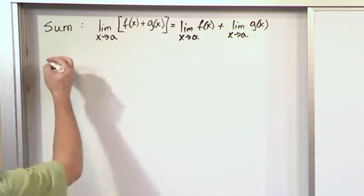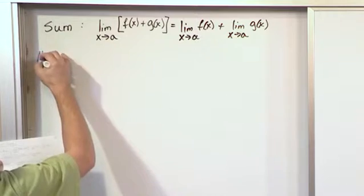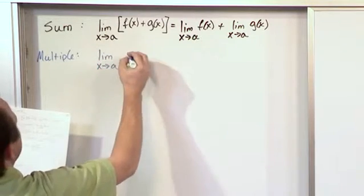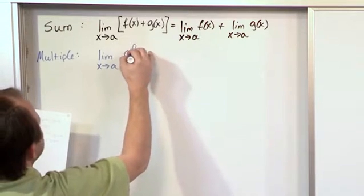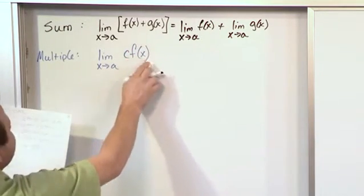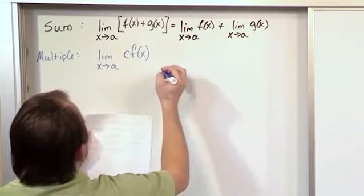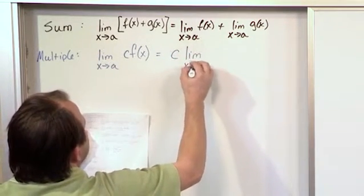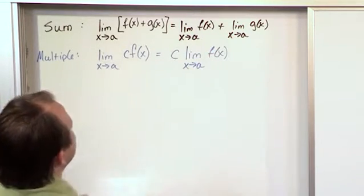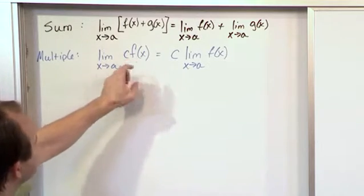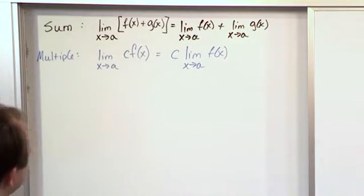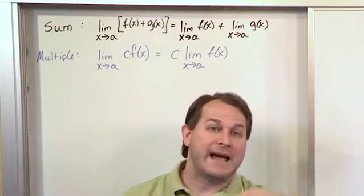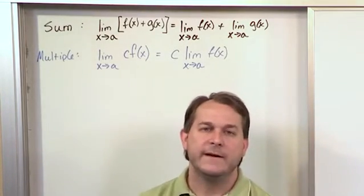We have another one called multiple. If I have the limit as x approaches a of some number c—c is a constant—times f(x), so this could be 5 times a function or negative 3 times a function, then basically you can take the constant out and multiply it times the limit as x goes to a of f(x). So what it's saying is if I'm taking the limit of a number multiplied by a function, then I can just take that number totally away, take the limit of the function, get the limit, and then go back and multiply. I can remove the constant from the outside, deal with it later, and then multiply at the end. You've actually done this before too.